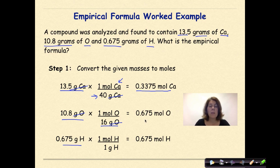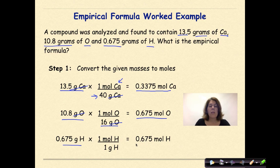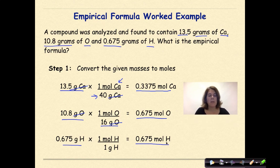The result is 0.675 moles of oxygen. Going from grams of hydrogen to moles of hydrogen also gives 0.675 moles of hydrogen. Step one is just converting to moles, making sure that you have your setup and that your units cancel.